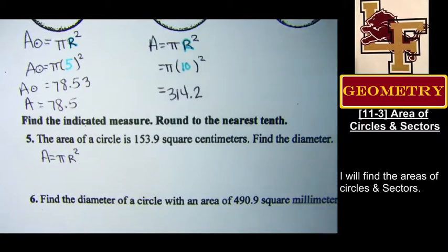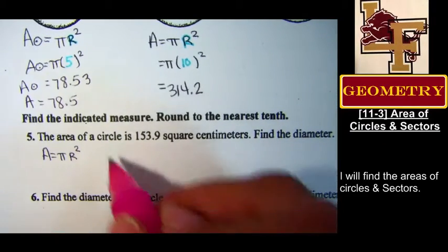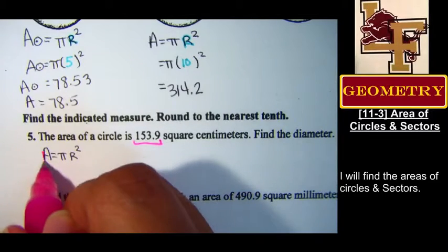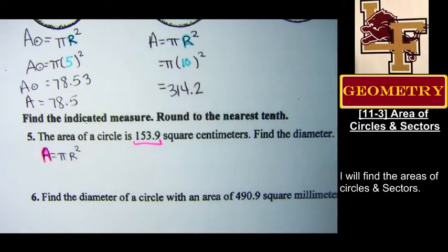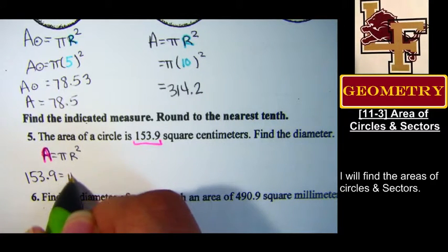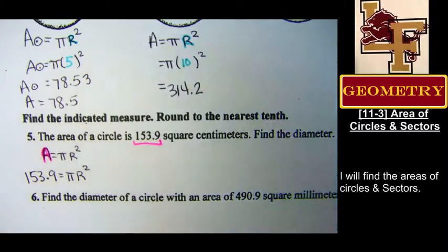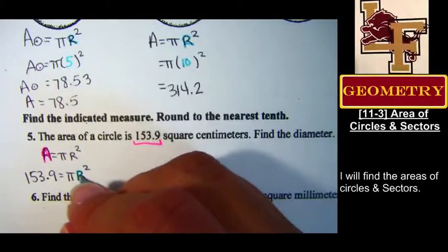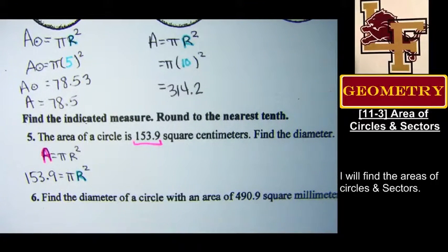All right. What's the area? 153.9. Yeah, square units. But we're just going to handle with the numbers. 153.9. I need to get the radius by itself. I'm going to get the radius by itself. How do I do that?